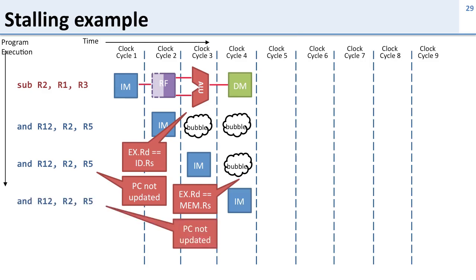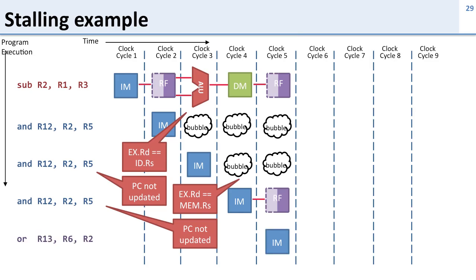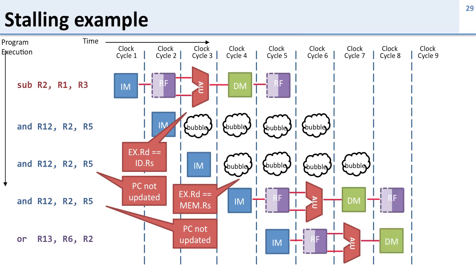Again, because we inserted a bubble, our PC isn't updated and we see the same instruction again. Now we have our next cycle with these bubbles going through the pipeline, but we can continue because we don't have any hazards. We go ahead and continue executing our instructions, and now our program works correctly. We've inserted bubbles to delay the AND instruction sufficiently so that we don't have any hazards.